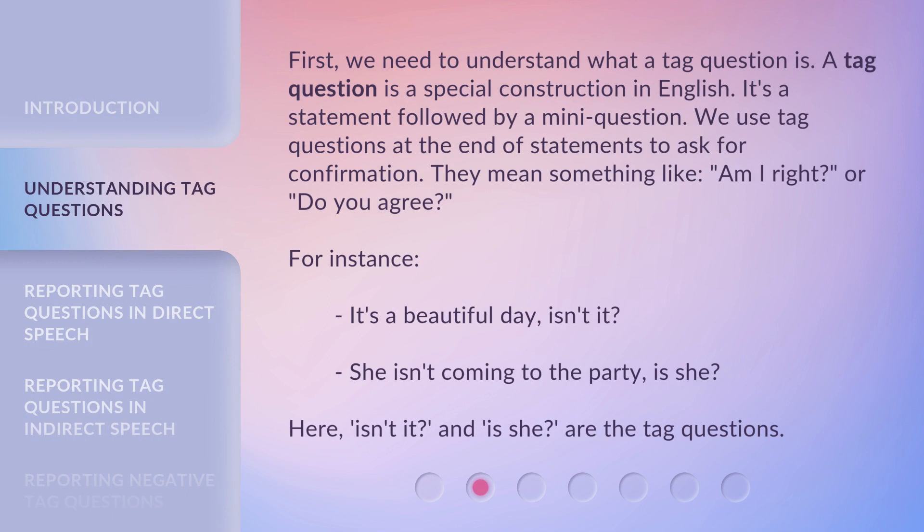First, we need to understand what a tag question is. A tag question is a special construction in English — it's a statement followed by a mini-question. We use tag questions at the end of statements to ask for confirmation. They mean something like, 'Am I right?' or 'Do you agree?'